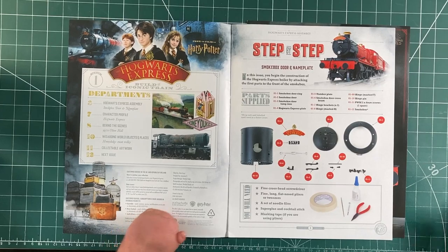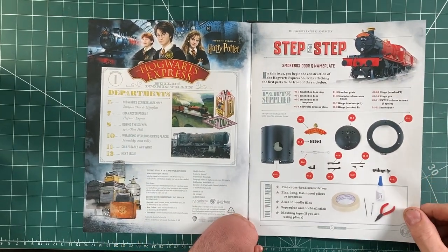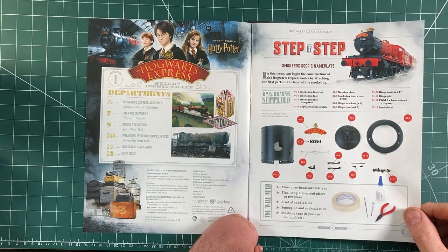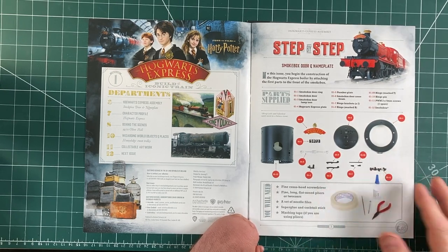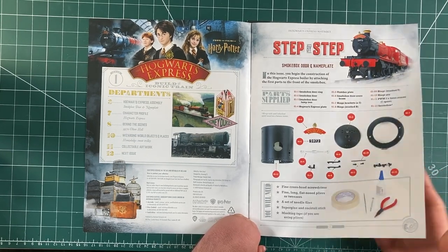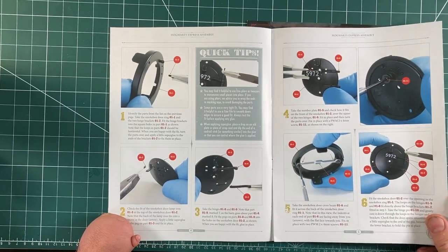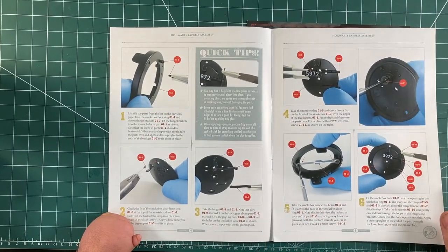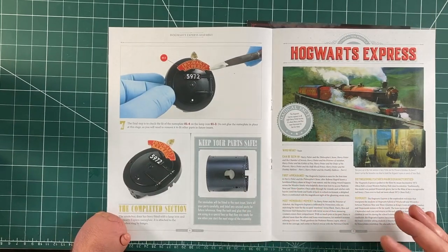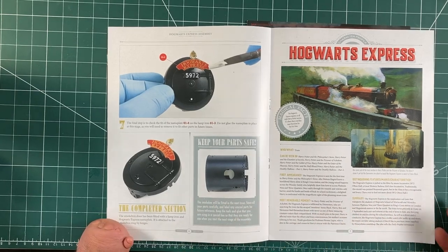So the actual magazine. So the building, we will be building a smoke box door and nameplate. So there's a list of the parts, list of the tools needed, and the instructions.